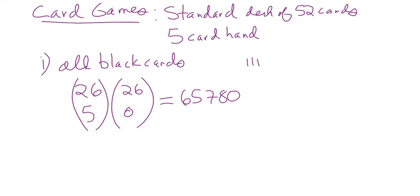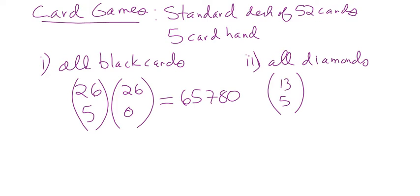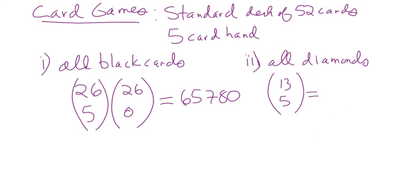All diamonds: there are 13 diamonds, I want five. So 13 choose 5 = 1,287. In poker, that's called a flush. However, twelve of those are straight flushes and counted separately. Set theory, counting, and probability are all tied together — we'll do poker hands in probability later.